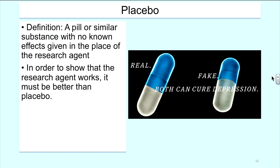Placebos are a pill or similar substance with no known effects, used in place of the research agent. In order to show that the research agent works, it must be better than the placebo. Pharmaceutical manufacturers will produce a placebo that looks exactly similar to the real drug so that participants cannot determine the difference. In clinical studies, we often find a 30% placebo effect — where people who receive the placebo may actually have an alleviation of symptoms. In some instances, with chronic conditions of high mortality, placebo-controlled trials may not even be ethically appropriate.